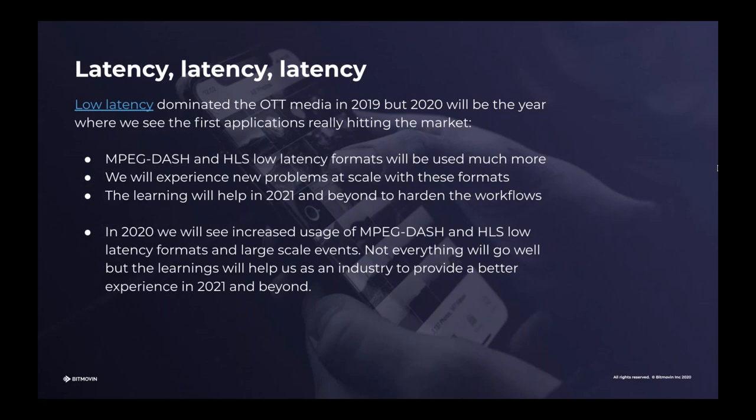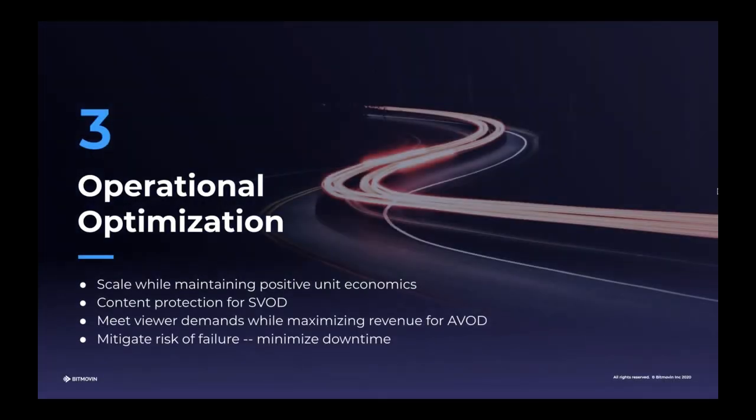We're on our third and final value driver for 2020: operational optimization. What we really mean here is creating a sustainable business — scaling modern streaming services while maintaining positive unit economics. We understand that in the short term, a lot of operators are now trying to buy audiences, and so that may not be profitable from a pure P&L perspective. However, it is still crucial at these stages that the unit economics and the per-viewer math work out correctly, because the last thing we want is customers building an unsustainable business where it costs too much to actually service the viewers. We also put content protection for SVOD and meeting viewer demands while maximizing revenue for AVOD under this umbrella — the goal is to mitigate the risk of failure.